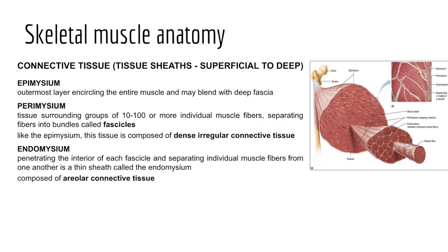We consider connective tissue further by looking at connective tissue sheaths that extend from the deep fascia to further protect and strengthen skeletal muscle. We have three different types: epimysium, perimysium, and endomysium. First, epimysium is the outermost layer which encircles a whole muscle, composed of dense irregular connective tissue. Next, perimysium surrounds groups of muscle fibers we call fascicles — bundles of 10 to 100 or more individual muscle fibers grouped together — also composed of dense irregular connective tissue.